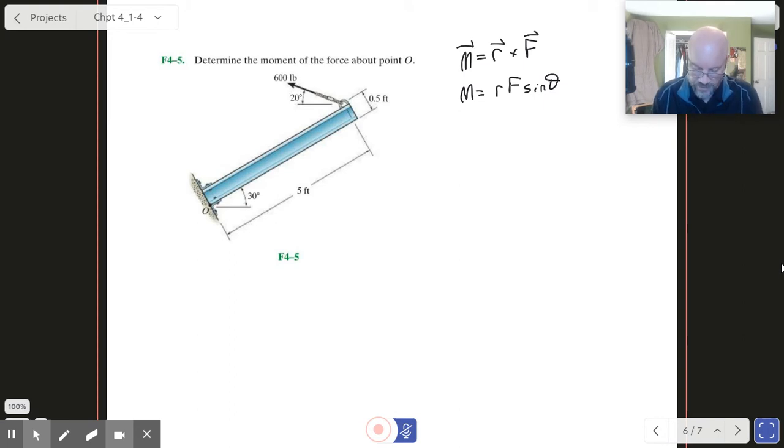Obviously we can see where our vector F is, it's right here, piece of cake. But r is a little tricky, and at first guess you might think, well, r is just sitting in there at 30 degrees.